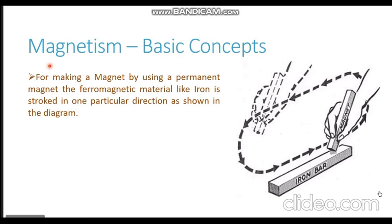The first method to convert a ferromagnetic material into a magnet is by use of permanent magnets. For making a magnet from a ferromagnetic material using a permanent magnet, the material like iron is stroked in one particular direction.